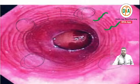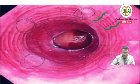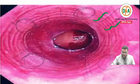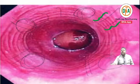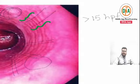Multiple esophageal rings are seen. There are also longitudinal furrows - you can see these longitudinal furrows clearly. When you take a biopsy, you will find more than 15 high power fields containing eosinophils.